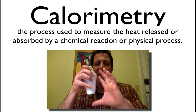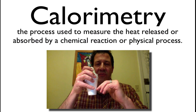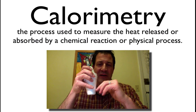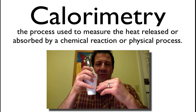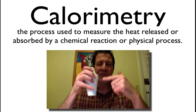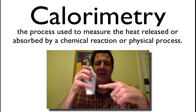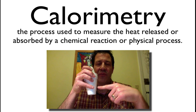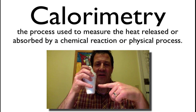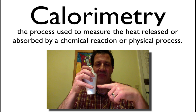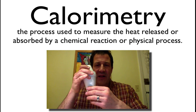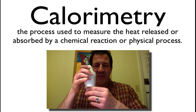The general idea is that any energy gained or released by the reaction will go into the water. We can measure the change in temperature of the water and calculate the change in energy. The change in energy of the water will be equal to, but opposite in sign, the energy that was gained or released by the reaction. So that's our calorimeter and that's basically how we use it.